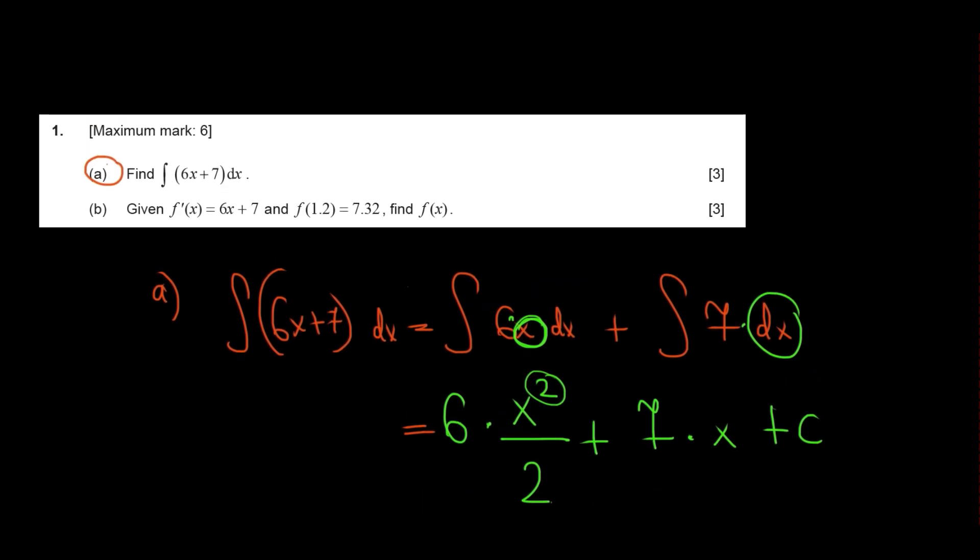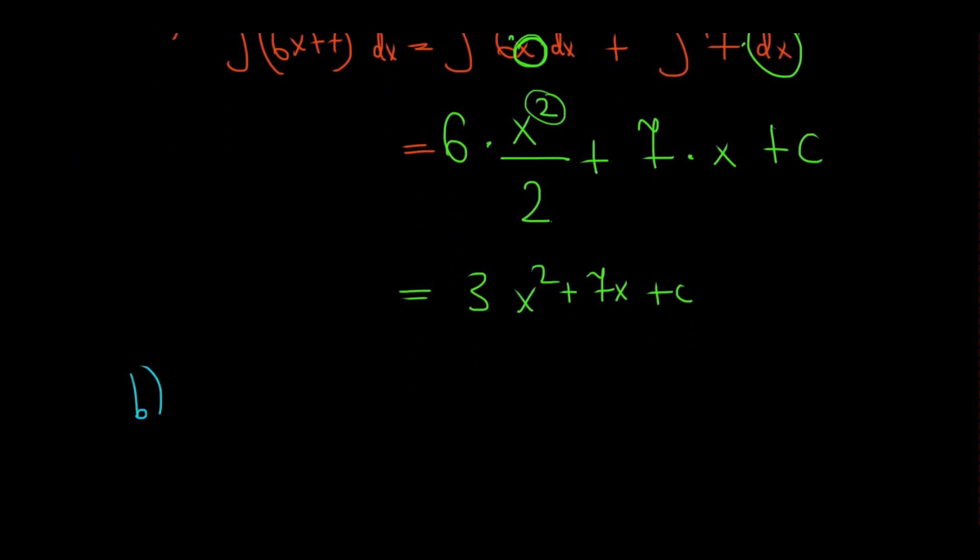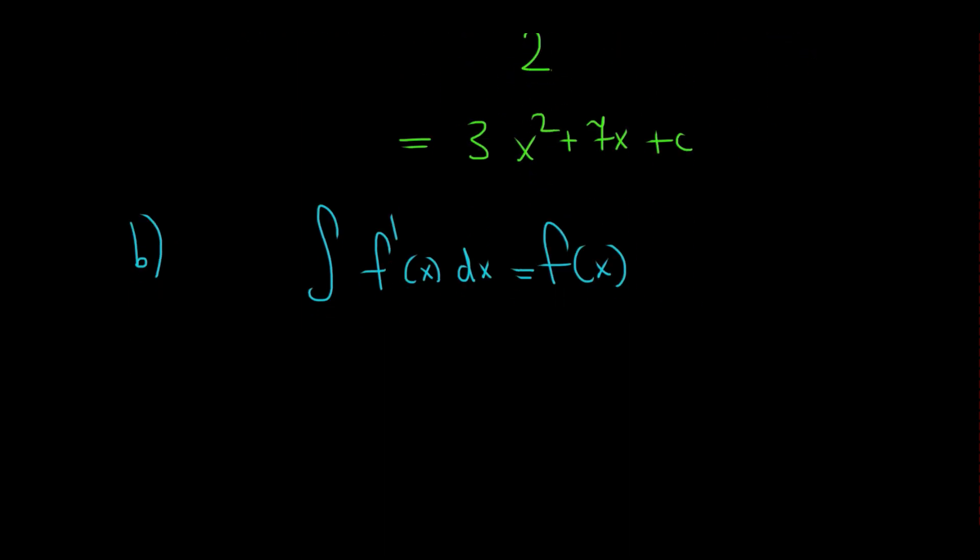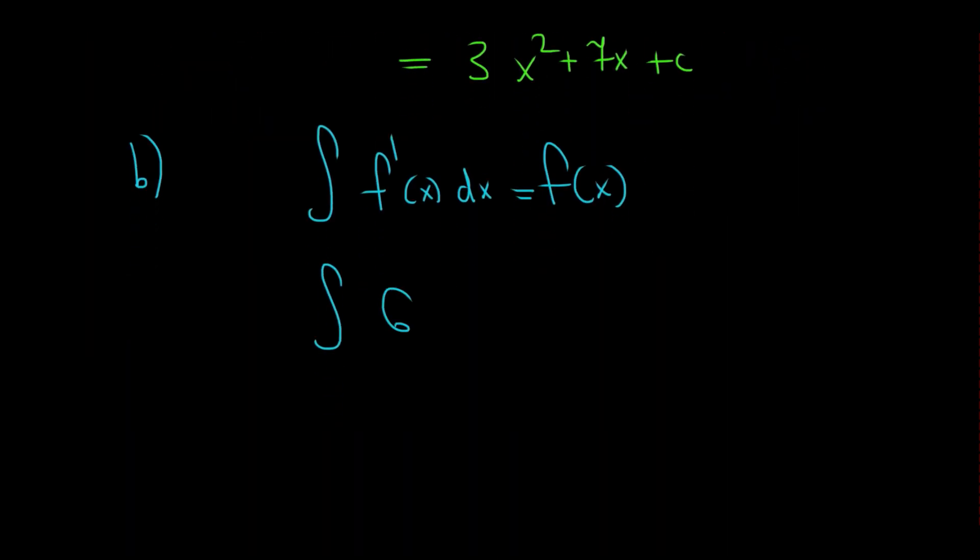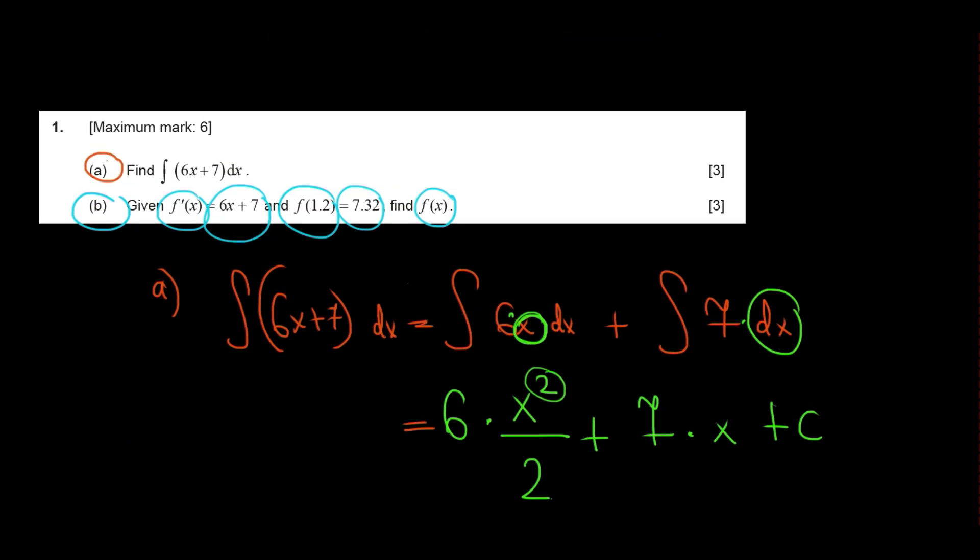For part b, we do the following. Given that the integral equals to 6x plus 7, and f of 1.2 is 7.32, find the function f of x. Well, we know that the integral of f derivative x dx equals to the original function. And we also know that the integral of the derivative, which in this case is 6x plus 7 dx, equals to the original function. And we also know that f of 1.2 is 7.32.